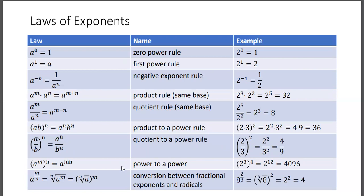Power to a power, a to the m, that expression to the nth power. Drop the parentheses by multiplying the exponents. Two to the third to the fourth power is the same as two to the twelfth, which happens to be 4096.